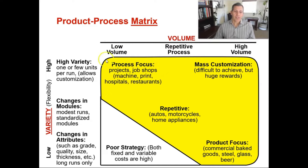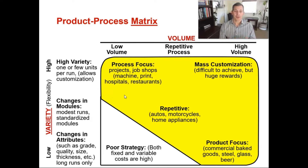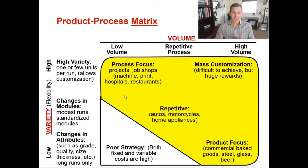Let's talk about the process focus. These are when you're building things around projects or work orders — sometimes these are called job shops. This is where you have a lot of different specialty machines. It could be a machine shop, a print shop; hospitals and restaurants would fall into this category. Instead of saying low volume and high variety, I'm just going to say high mix, but they mean the same thing. So a process focus is when you have lower volume and higher variety products.